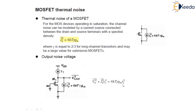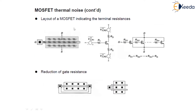Now the ohmic section of the MOSFET can also contribute to thermal noise. As illustrated in this figure, the gate, source, and drain also exhibit finite resistivity, therefore introducing noise. For a relatively wide transistor, the source and drain resistance is typically negligible, whereas the gate distributed resistance may become noticeable.